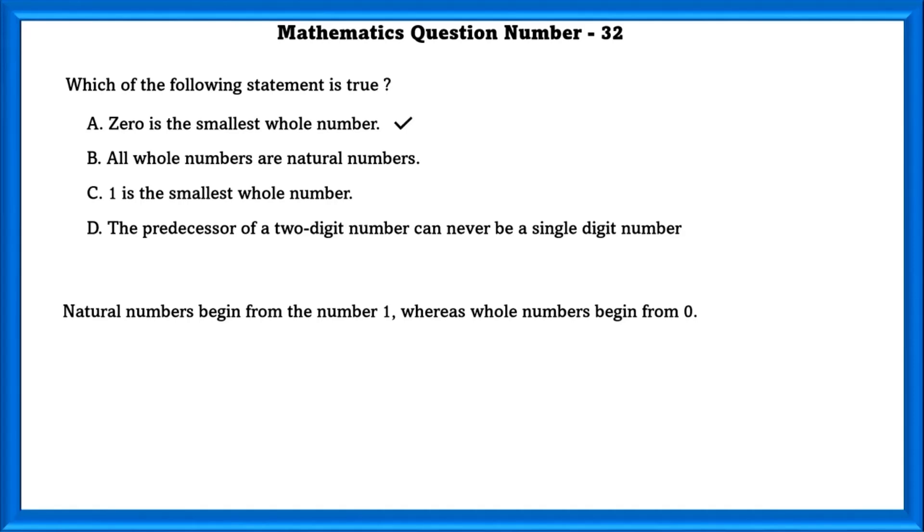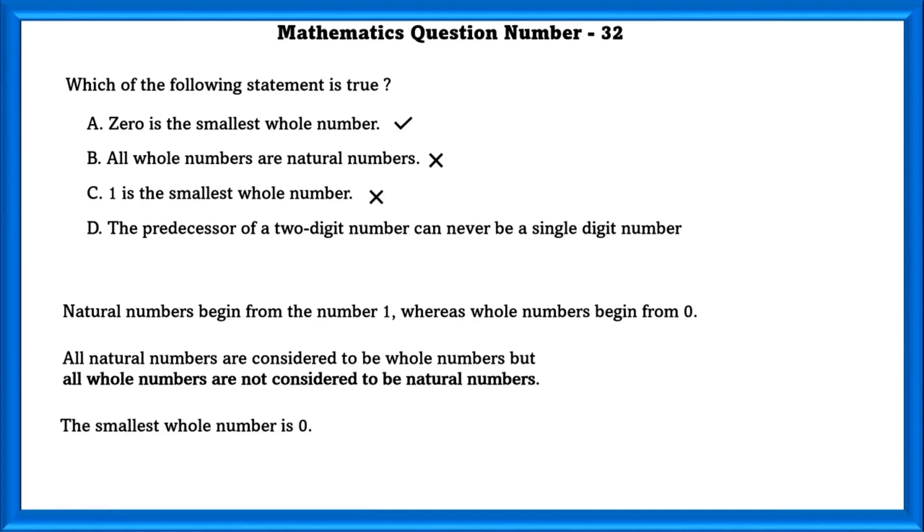Second one. All whole numbers are natural numbers. All natural numbers are considered to be whole numbers but all whole numbers are not considered to be natural numbers. 1 is the smallest whole number. Wrong. 0 is the smallest whole number.